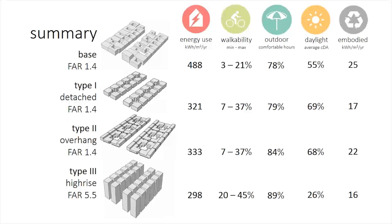We summarize our results in the form of a scorecard, showing energy use intensity, walk score, outdoor thermal comfort, daylight autonomy, and embodied energy for the neighborhood as built and our three proposed interventions. The high-rise typology, Type 3, outperforms the others in terms of energy use intensity, walk score, outdoor comfort, and embodied energy. However, better daylight autonomy is achieved with the detached and overhang typologies, Types 1 and 2. These proposals with lower floor area ratios might also be said to provide more desirable living spaces, demonstrating the trade-off between our goals of comfort and density — an important point to consider in future investigations.